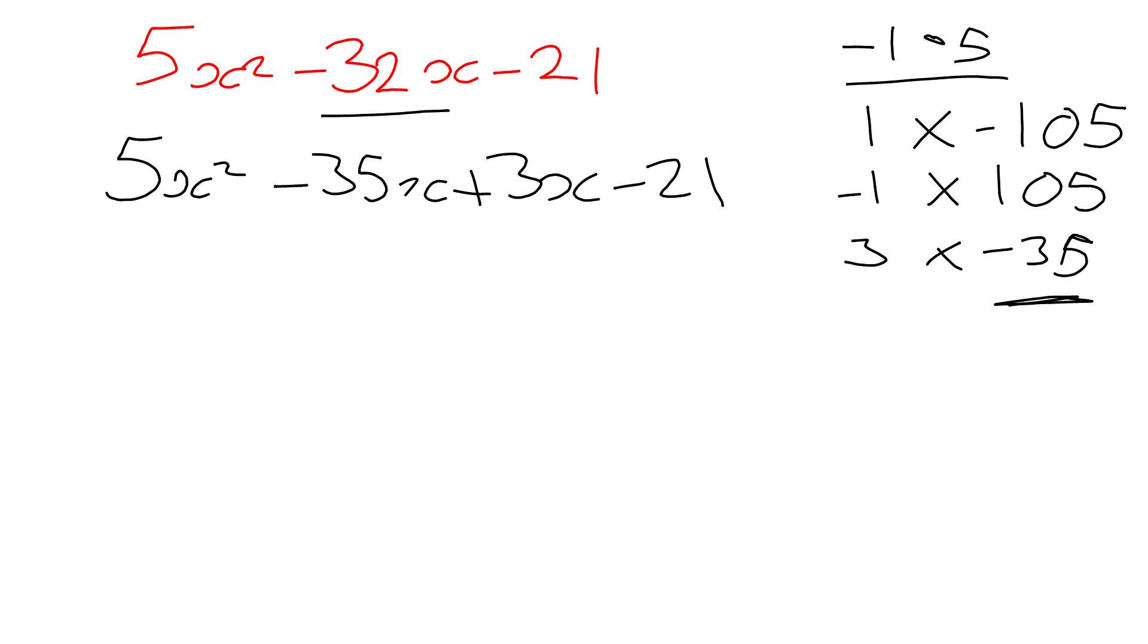We could have done it the other way around, but this is easier. So, I'm going to factorize this first pair. So, I can take 5x out. That's going to leave me with x minus 7 plus. And I'm going to factorize this second pair. I can take 3 out, and that leaves me with another x minus 7.